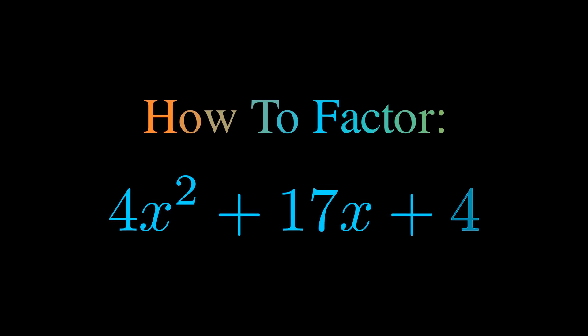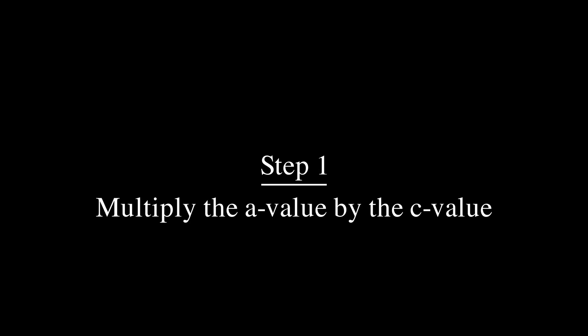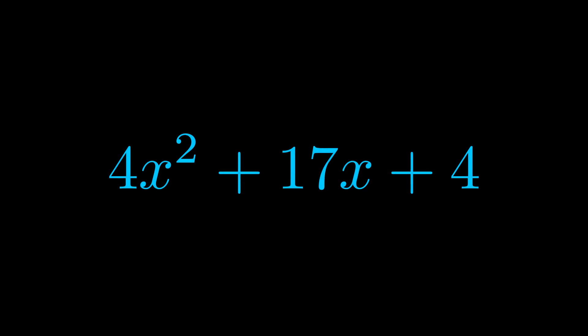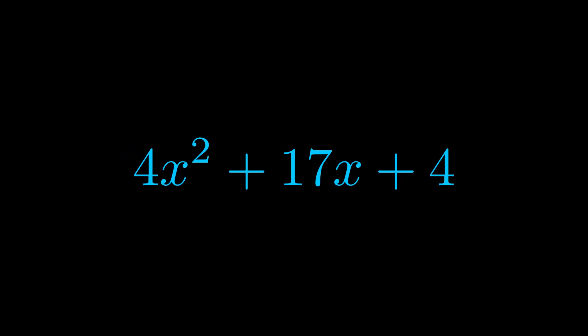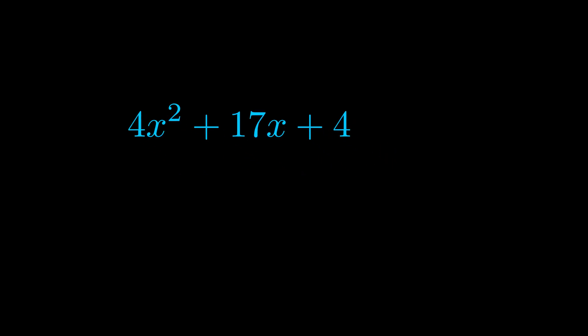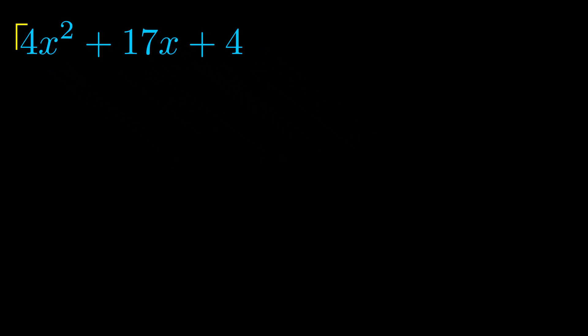In this video we're going to learn how to factor this equation. Step one when factoring an equation of this form is to multiply the a value by the c value. Here we can see that our a value is the coefficient on the x squared term, and our c value is the constant term. When we multiply these two values we get this value here in magenta.